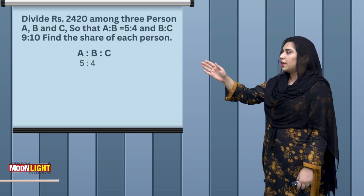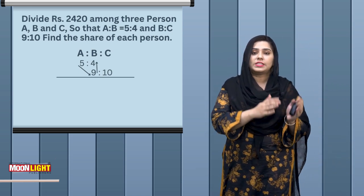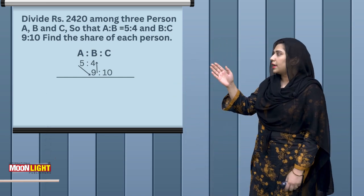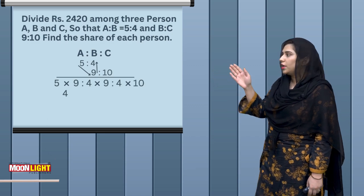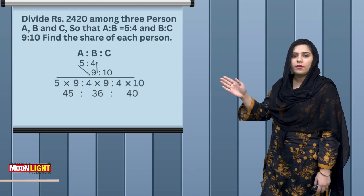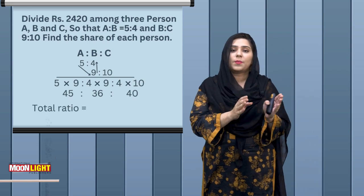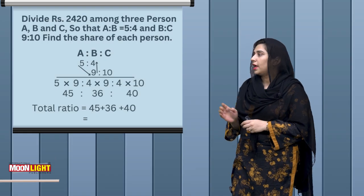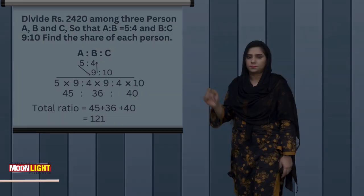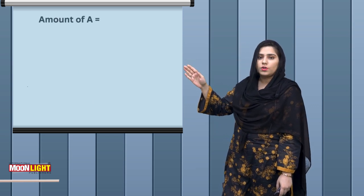We write A:B:C, then A:B = 5:4 and B:C = 9:10. We multiply as learned in the previous video — A with B, B with B, then B with C — giving 5×9 : 9×4 : 4×10, which equals 45:36:40. Now we find the total: 45 plus 36 plus 40 equals 121.